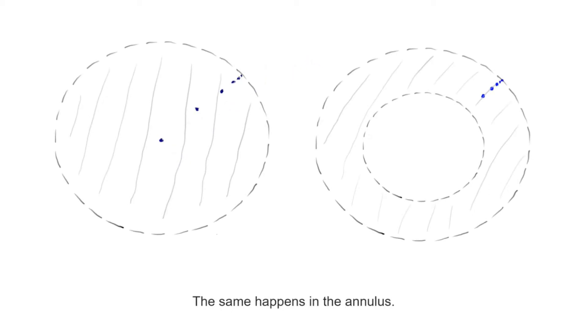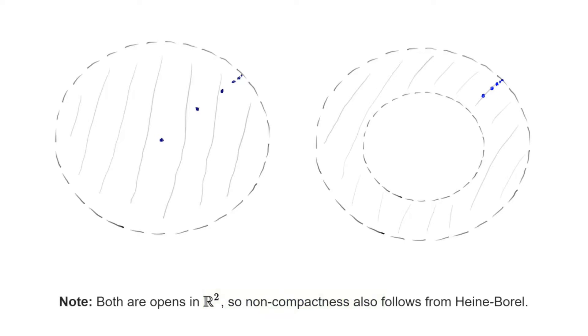Therefore, we conclude that both spaces are not compact. A statement you're probably familiar with is the Heine-Borel theorem. It says that the compact subsets of Euclidean space are those that are bounded and closed. Therefore, invoking this theorem and noting that both the annulus and the disk we're considering are open, we could have deduced as well that they must be non-compact.